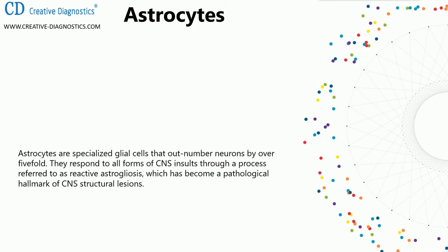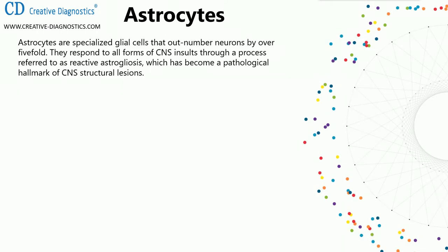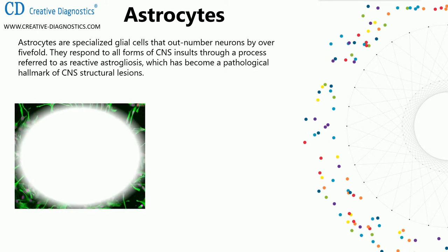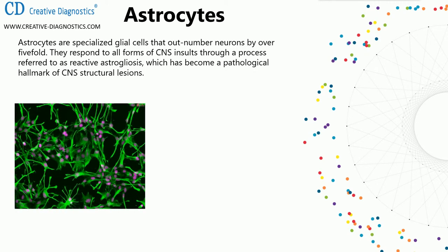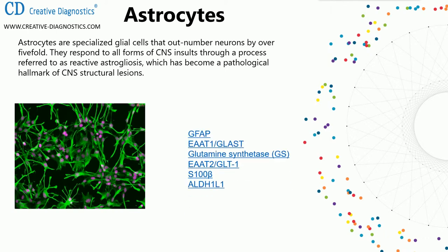Fourth: astrocytes. Astrocytes are specialized glial cells that outnumber neurons by over five-fold. They respond to all forms of CNS insults through a process referred to as reactive astrogliosis, which has become a pathological hallmark of CNS structural lesions. Astrocyte markers include GFAP, EAAT1/GLAST, glutamine synthetase, EAAT2/GLT1, S100-beta, and ALDH1L1.